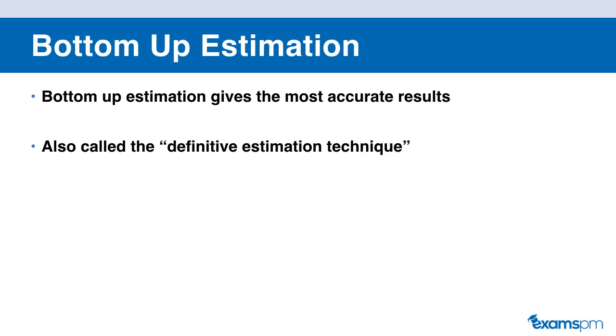And our fourth and final type of estimation is called the bottom-up estimation. The bottom-up estimation technique gives you the most accurate results and is also known as the definitive estimation technique. So in this technique, you find the cost or the schedule of the activity by adding up all of the individual component parts of the project.